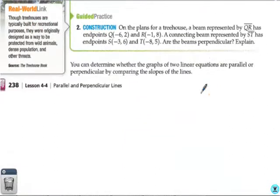We're going to use a real world example of the tree house. We have some beams that have been represented by QR and ST. And, we want to know are the beams perpendicular. So, what we're going to do is we're going to find the slope of QR and we're going to find the slope of ST and use that to determine whether or not the lines are perpendicular.